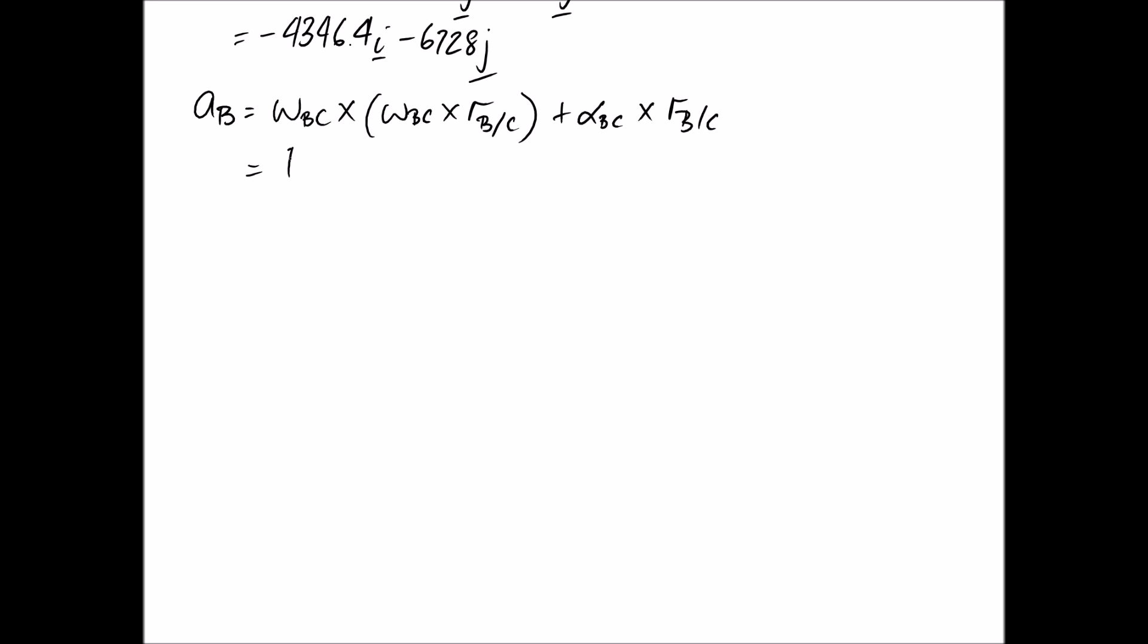So filling this out, we knew that omega BC was 4K from our analysis previously. And the radius is 200J. Alpha BC gets a K, because that's what we don't know, but we've assumed it the positive direction. And again, this is 200J.